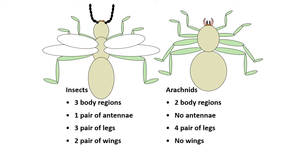Here are four ways to tell the difference between an insect and an arachnid that you can use to identify a cool critter you find outside. Insects have three body regions — the head, the thorax and the abdomen — whereas arachnids like spiders only have two. Insects also have one pair of antennae, three pairs of legs and two pairs of wings, whereas spiders and other arachnids have no antennae, four pairs of legs and no wings, thankfully.